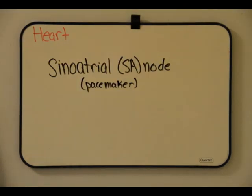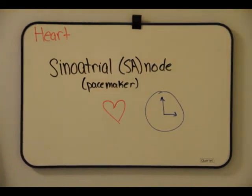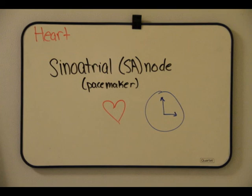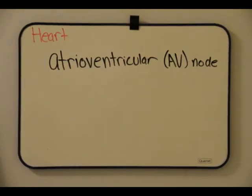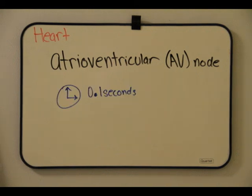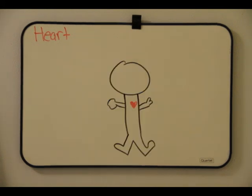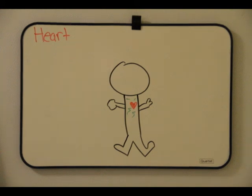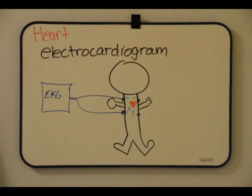Impulses from the SA node spread rapidly through the walls of the atria, causing both atria to contract in unison. The impulses also pass to another region of specialized cardiac tissue, a relay point called the atrioventricular, or AV, node. Here, impulses are delayed for a tenth of a second before spreading to the walls of the ventricles. The impulses that travel through cardiac muscle during the heart cycle produce electrical currents conducted through body fluids to the skin, where they can be detected by electrodes and recorded as an electrocardiogram, or EKG.